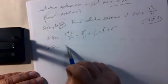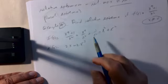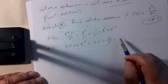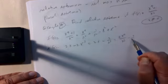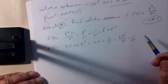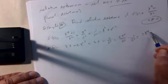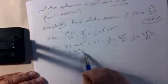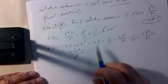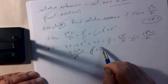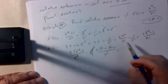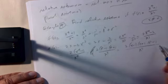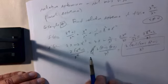So the derivative is 2x minus 2x⁻³, which is 2x minus 2/x³. Putting that over a common denominator: (2x⁴ - 2)/x³. Simplifying, that's 2(x⁴ - 1)/x³. And x⁴ - 1 factors into (x² - 1)(x² + 1), and x² - 1 factors into (x - 1)(x + 1). So the derivative is 2(x - 1)(x + 1)(x² + 1) / x³.